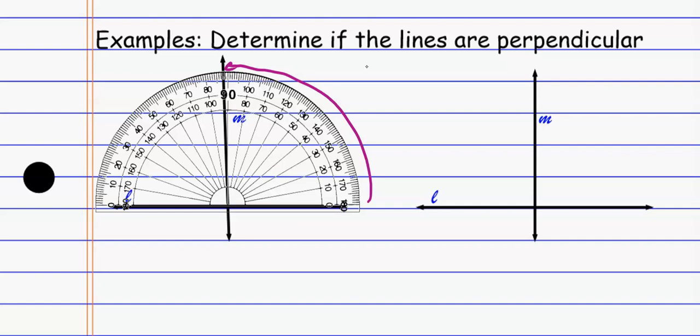I just have to measure one of them. And if one of them is not 90 degrees, then none of them will be 90 degrees. And so this one, the measurement is 92 degrees or 88 degrees, depending on which way you measure it. So these are not perpendicular lines.